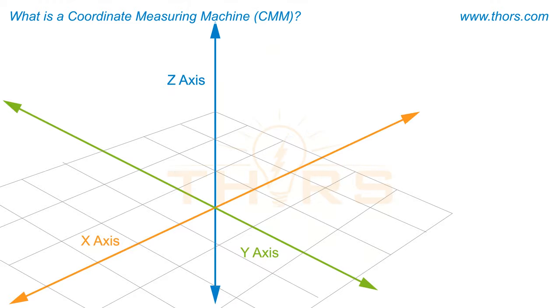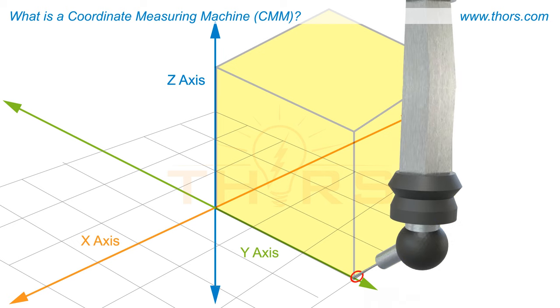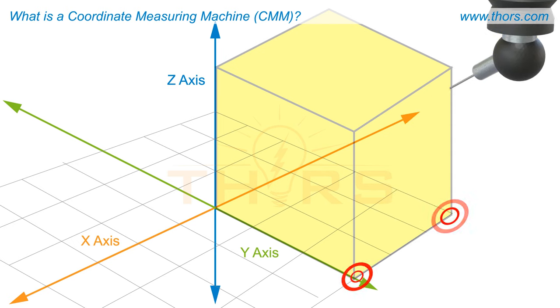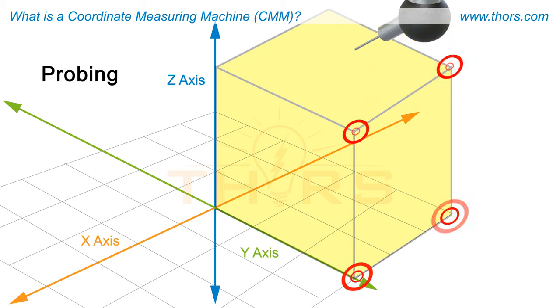The probe contacts the object at desired locations to get the coordinates of points on the object. This process is called probing.